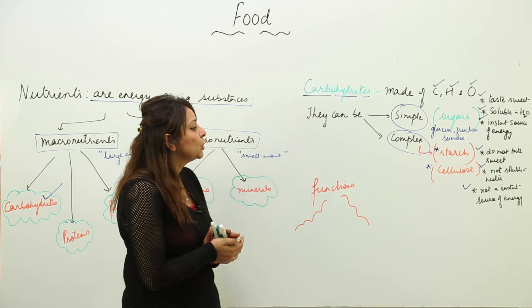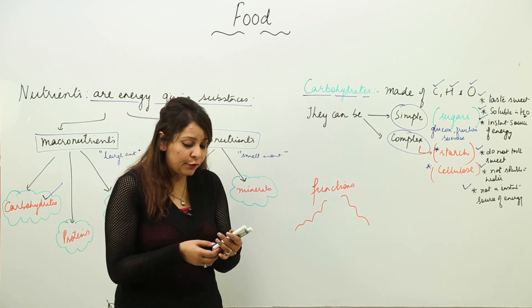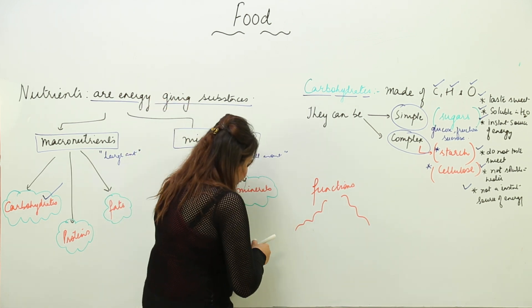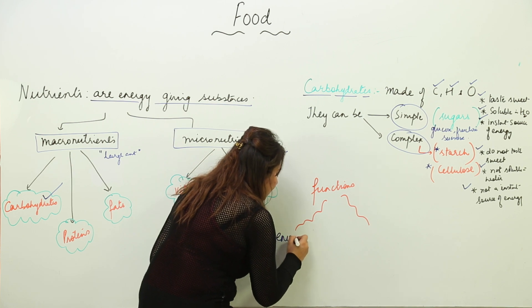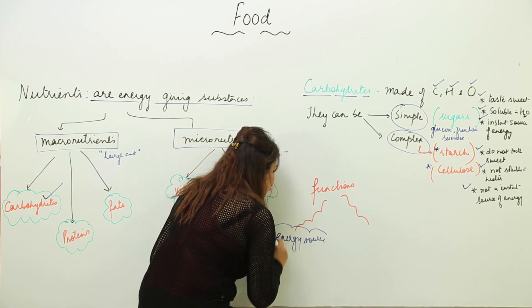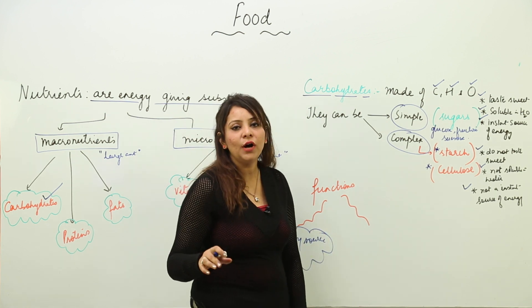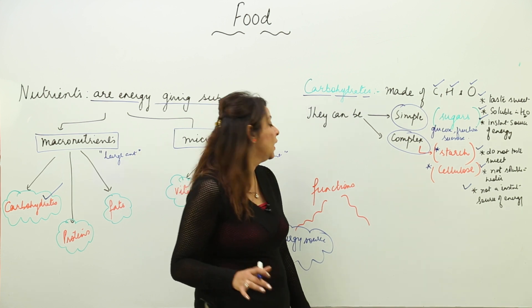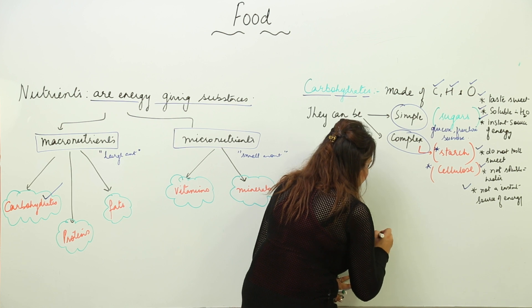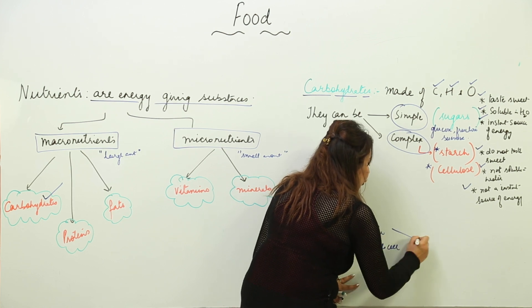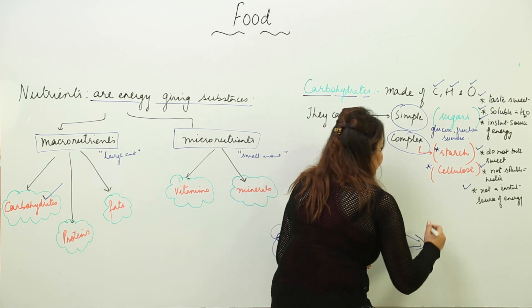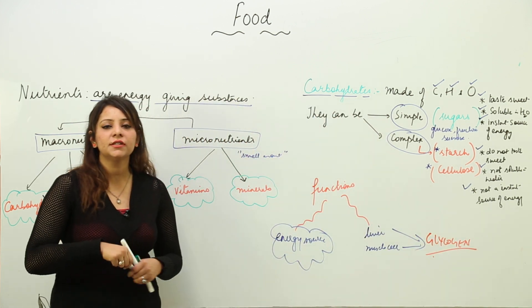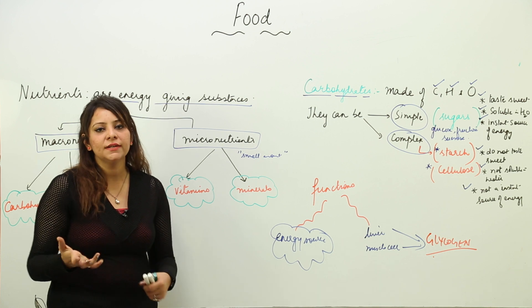What is the actual use of carbohydrate? The function is that it is an energy source - it provides energy. Secondly, if our energy requirement is already met, what happens to the excess carbohydrate? Excess carbohydrate gets stored in liver and muscle cells in the form of glycogen, which can be used up whenever you need energy. This glycogen can break up and provide energy.